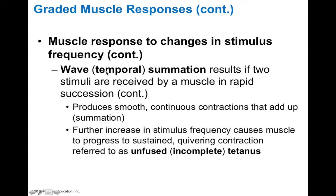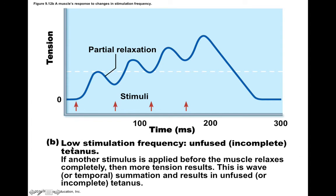This produces a smooth continuous contraction that summates, and further increases in stimulus frequency can lead to a quivering type of sustained contraction called unfused or incomplete tetanus. In the diagram, each arrow represents one stimulus. Before the first twitch fully relaxes, another stimulus occurs causing another twitch, and because it didn't fully relax, the second twitch adds on to the first, causing higher maximal tension. Each successive twitch adds on to the previous, producing tension greater than the initial individual twitch due to summation.